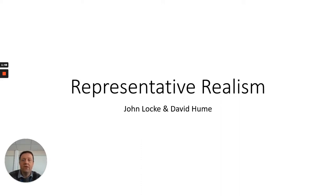Hello. In this video we are going to be looking at our second theory of perception, that of representative or indirect realism. There are three philosophers that you need to talk about in relation to representative realism. The first is John Locke, the second is David Hume, and the third is Bertrand Russell. I'm not going to cover everything on Hume in this video, but I will return to themes in representative realism when I look at Hume's empiricism.